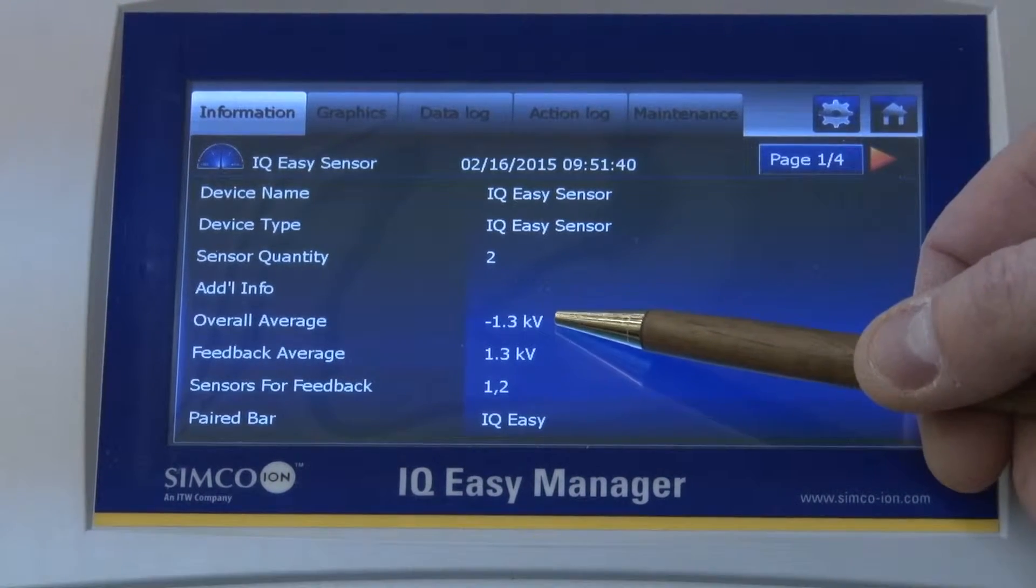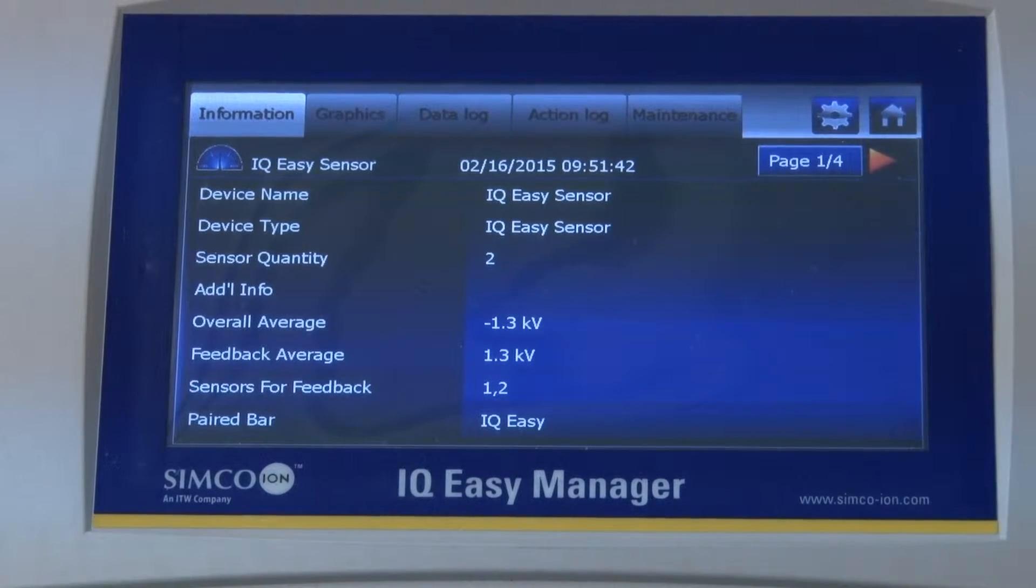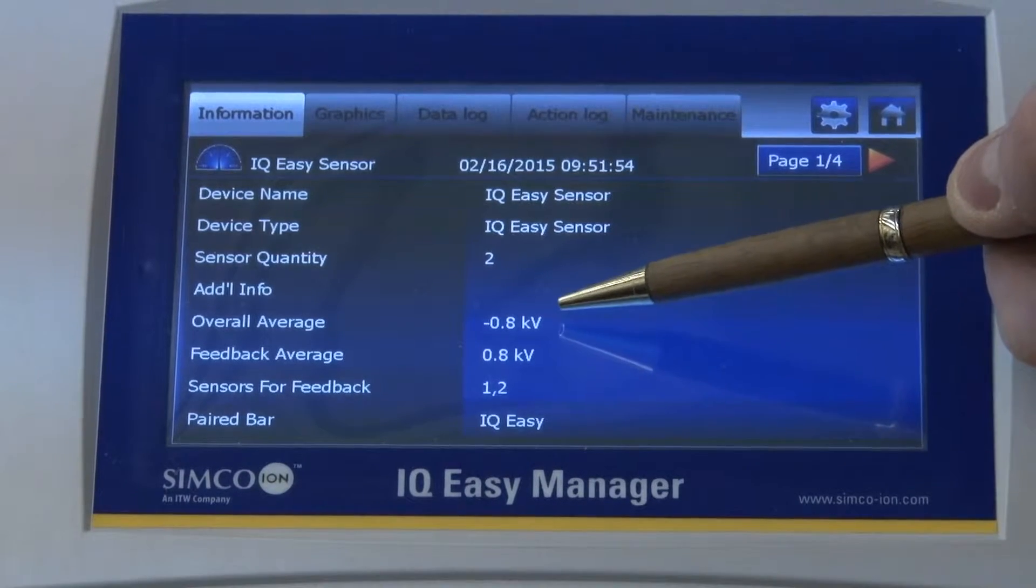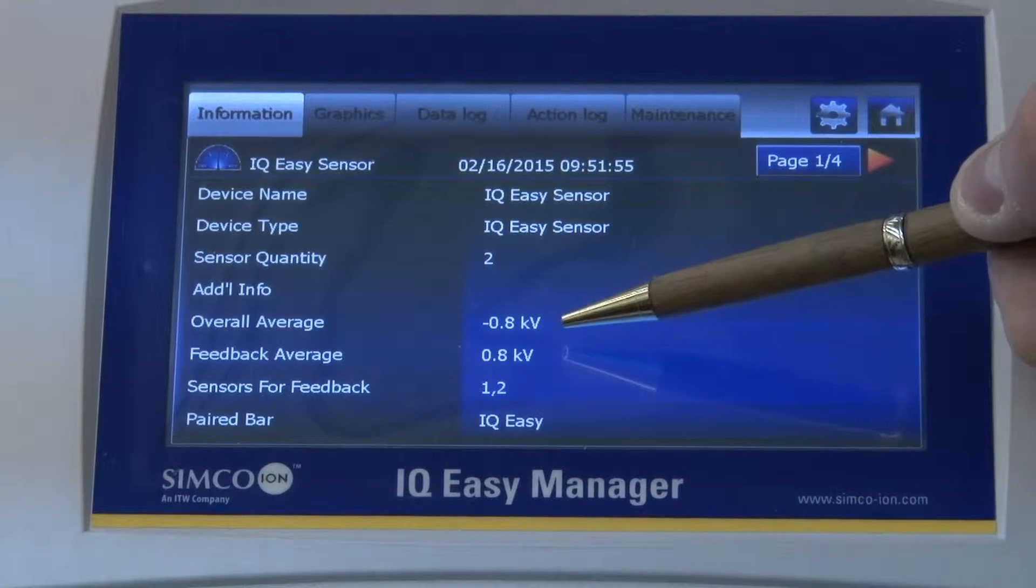And it's normal for this to take a little bit of time. We don't respond exceedingly fast in our closed-loop feedback loop. But you can clearly see that this number is getting closer and closer to zero, which is what we want.